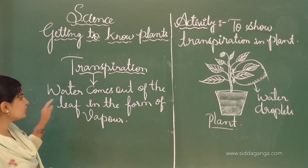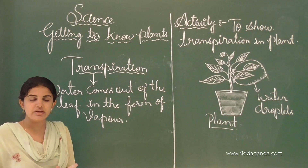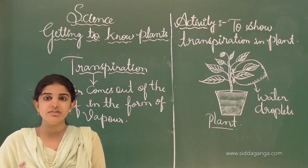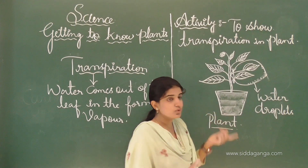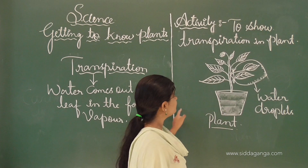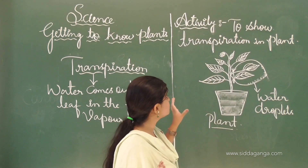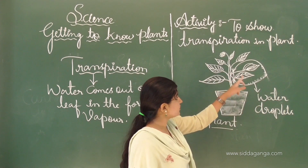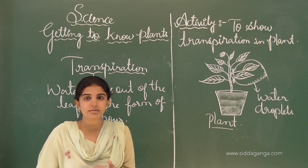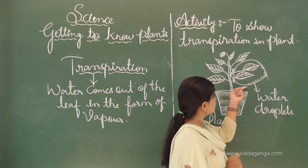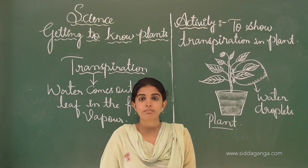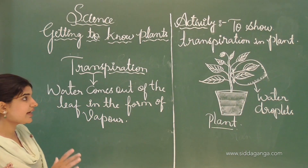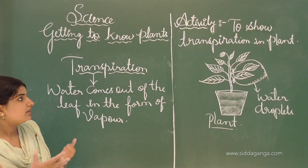Transpiration is nothing but water coming out of the leaf in the form of vapour, and this transpiration process takes place in the plants. During summer or hot conditions, transpiration is more active. The inner surface of the plastic or polythene cover shows water droplets during the process of transpiration. This experiment shows that transpiration takes place in the plants.